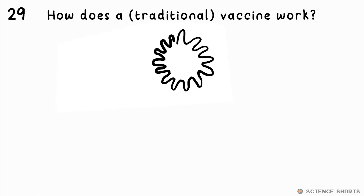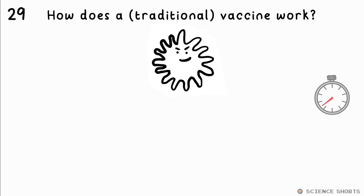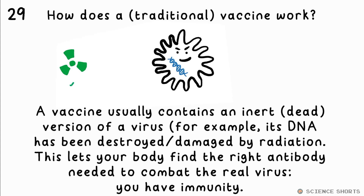How does a traditional vaccine work? A normal vaccine is an inert copy of a virus. When injected it cannot cause more copies of itself to be made, but it means your lymphocytes will have already found the right antibody to produce by the time you encounter the real virus — you now have immunity.